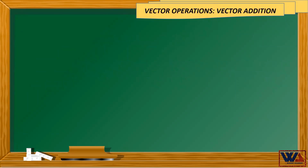Vector addition. There are two methods for adding any two vectors: the parallelogram method and the triangle method. The goal of each method is to obtain a triangular shape.